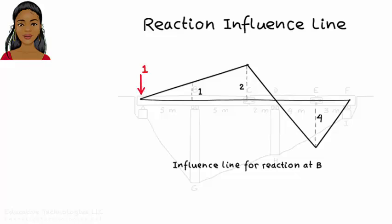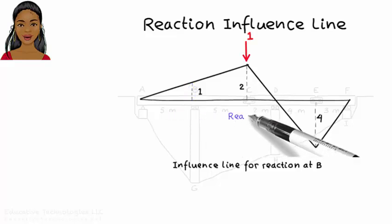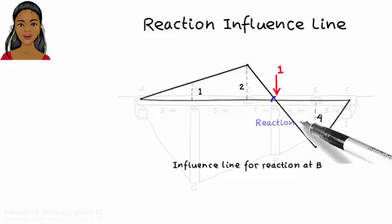For example, when the unit load is at point A, reaction force at B is zero. When the unit load reaches point B, the reaction force becomes one. When the load is over the hinge at C, the reaction force at B equals two. The reaction force becomes zero when the unit load reaches point D.